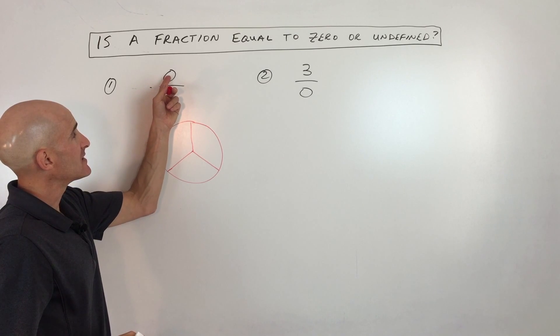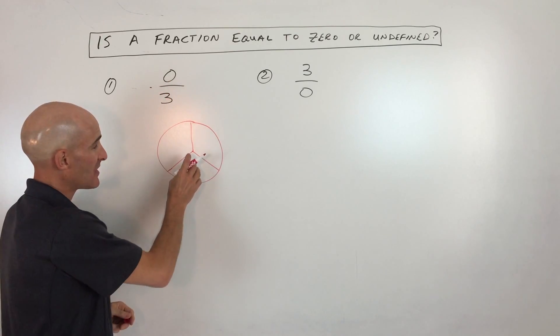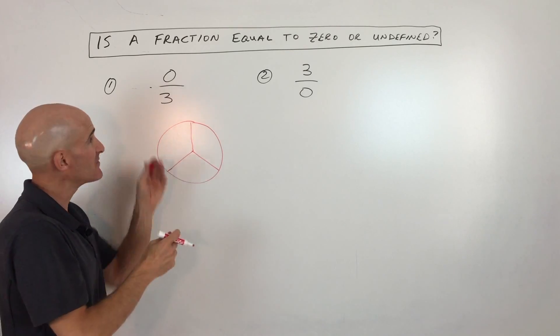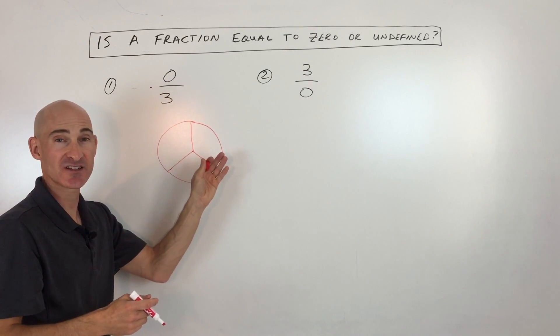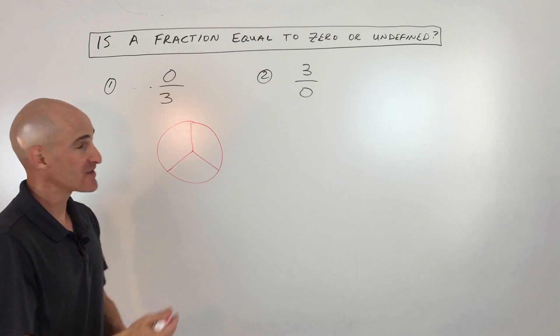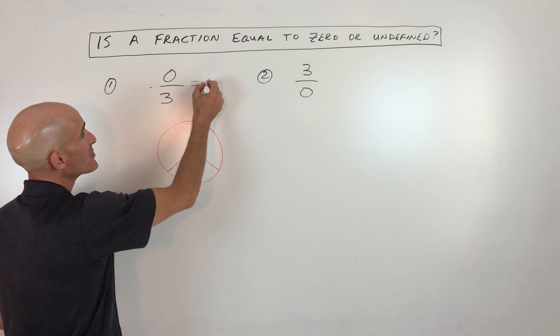But I'm going to have zero thirds. So I'm not going to have one part out of three or two parts out of three or three parts out of three. I'm going to have zero parts out of the three that it's divided into. So that means really you're going to have zero pizza. So that means that zero thirds is zero.